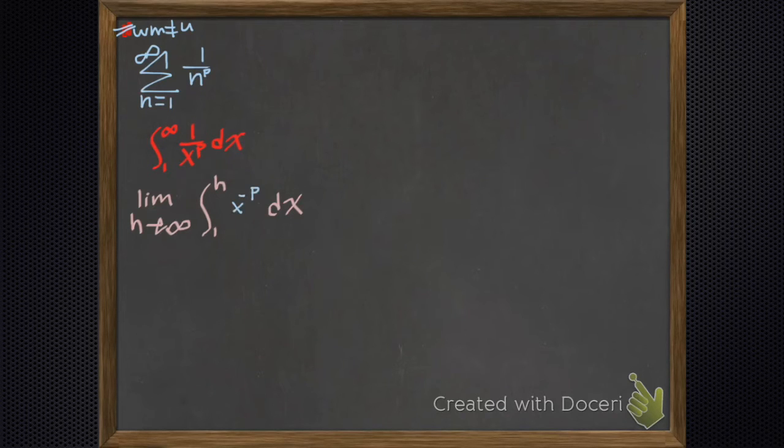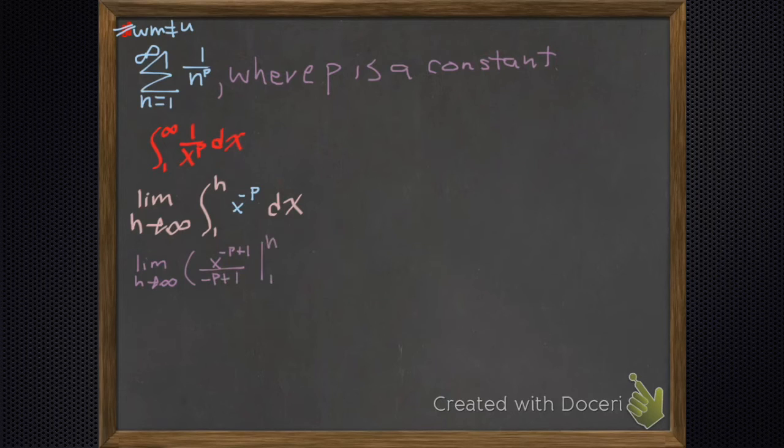Now I'm going to rewrite that integral just so that I can make it clear that we're using the power rule. So we integrate that. How? We add 1 and we divide by it. Notice that p is just a constant, it's some number.